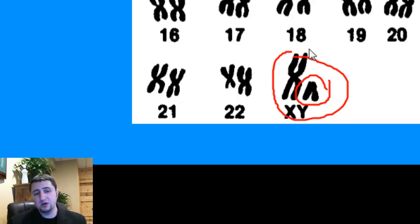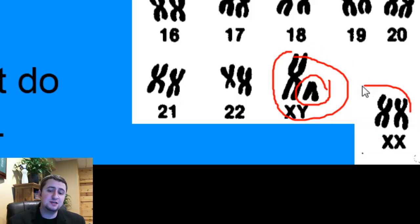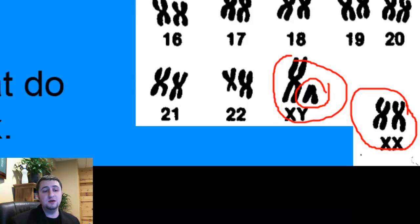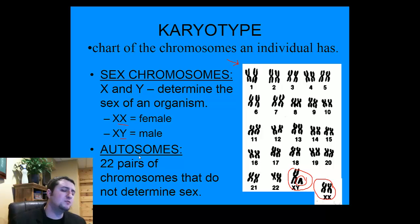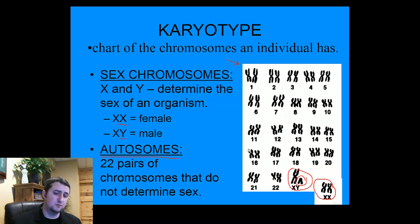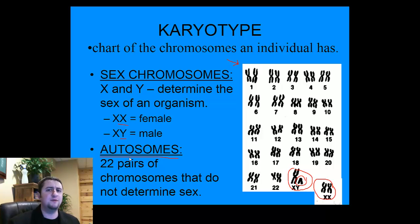If somebody had two X chromosomes instead, that person would be female. Now all the chromosomes that don't have anything to do with determining the sex of the child are called autosomes. So chromosome number 1 through 22 are all chromosomes that don't have anything to do with determining sex.